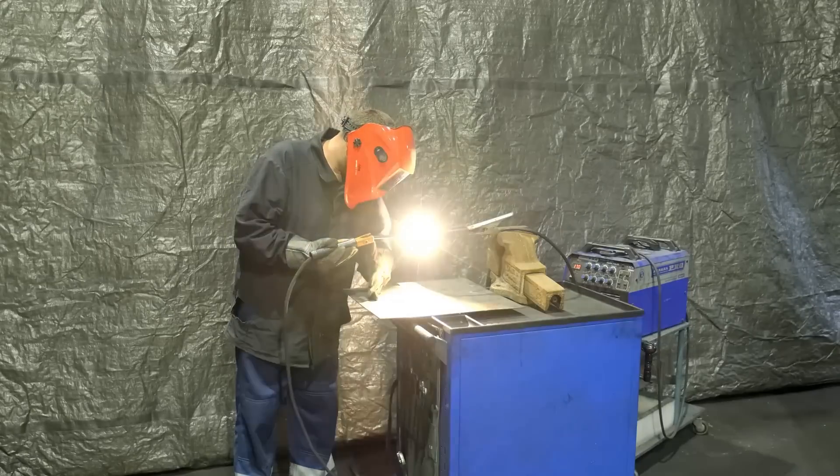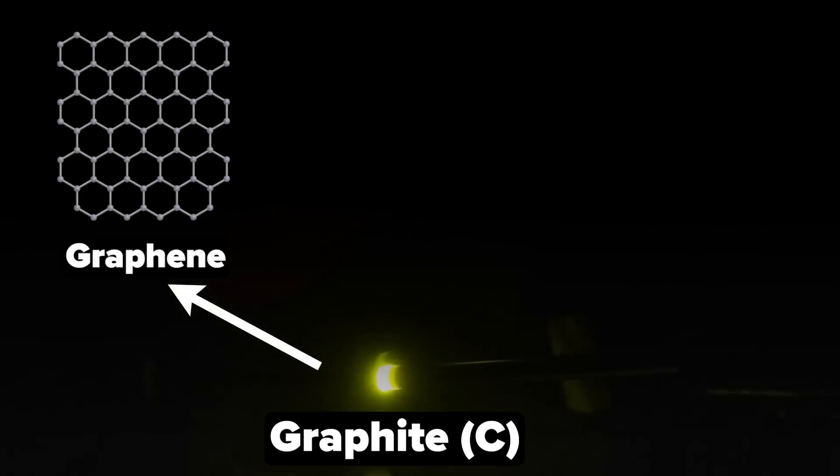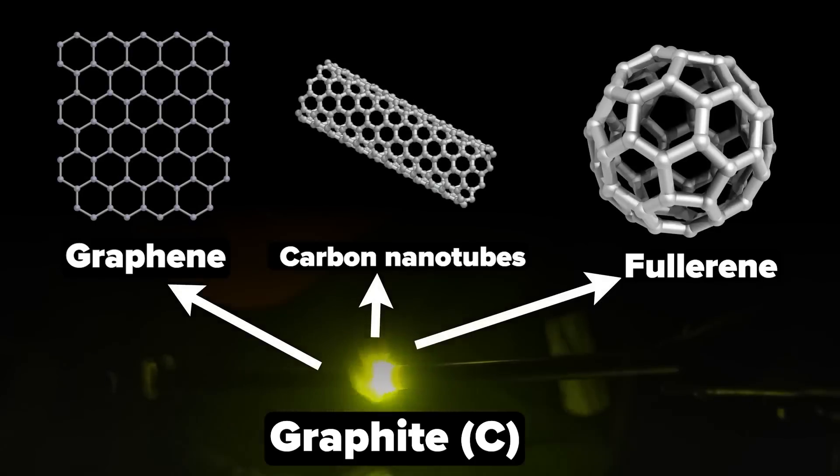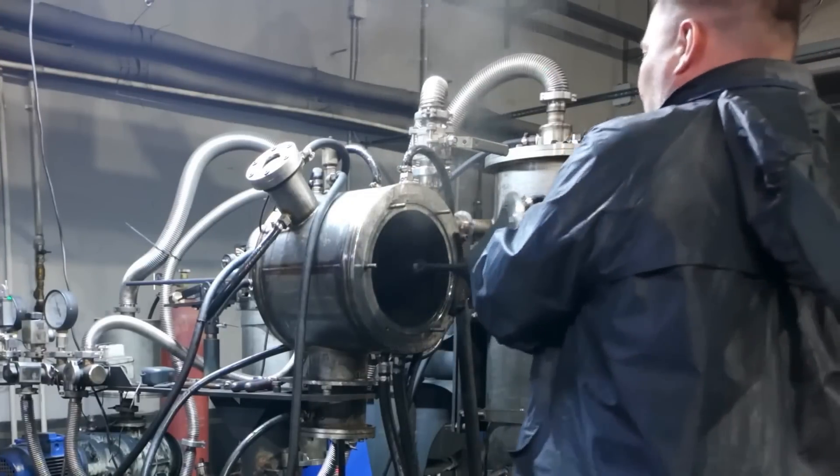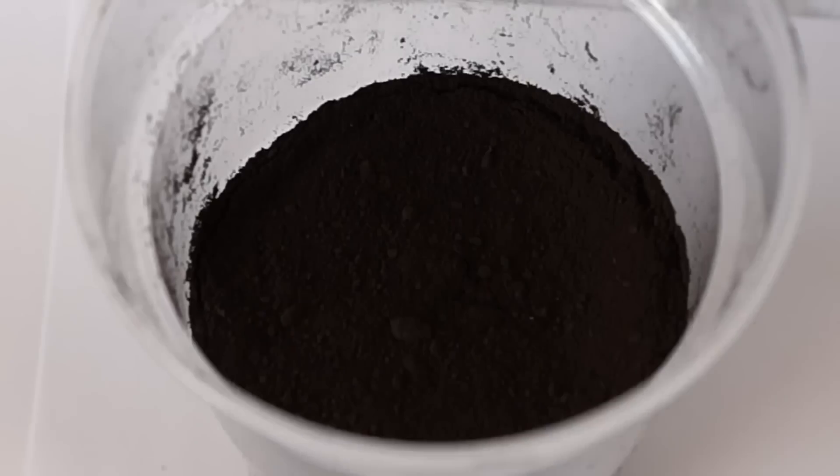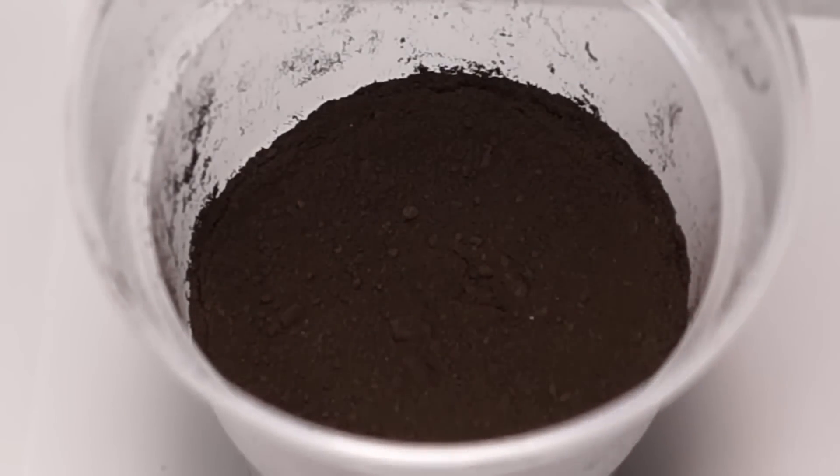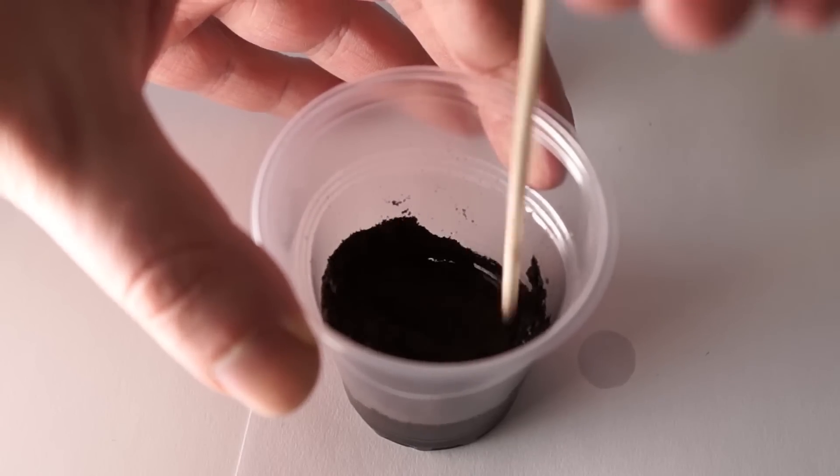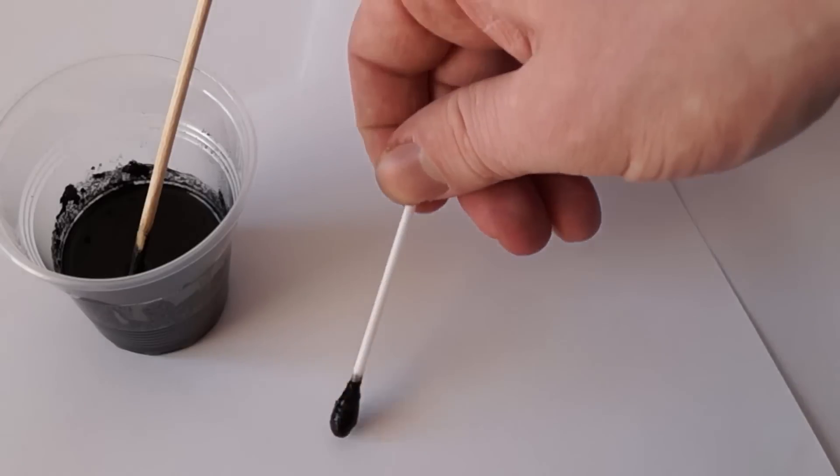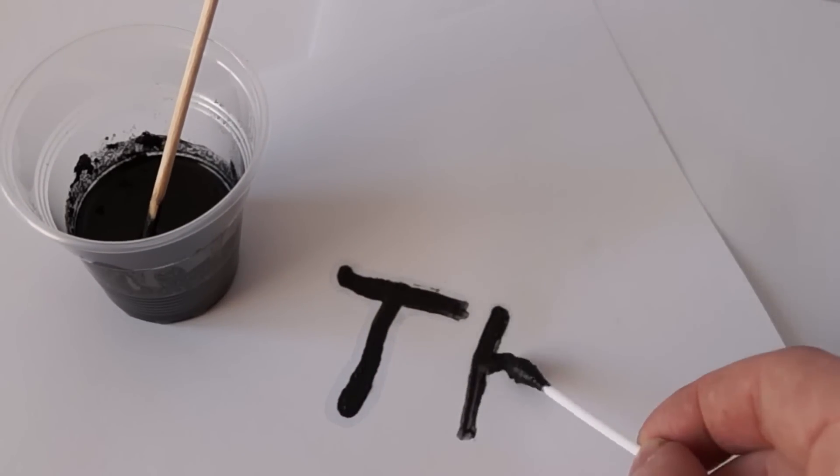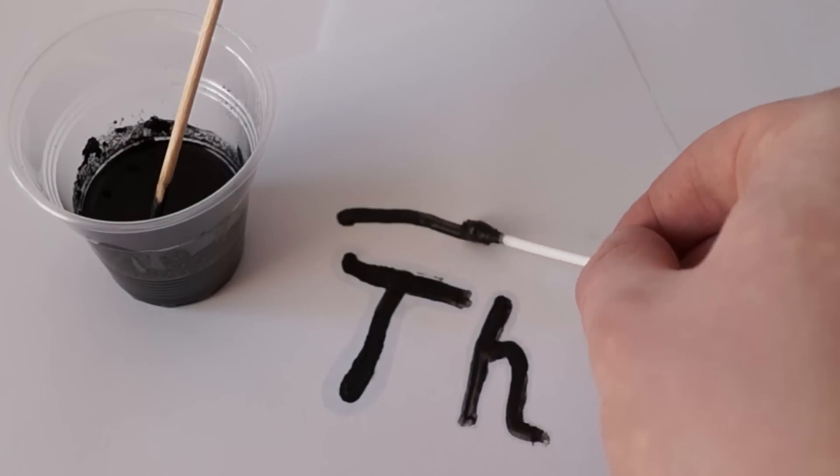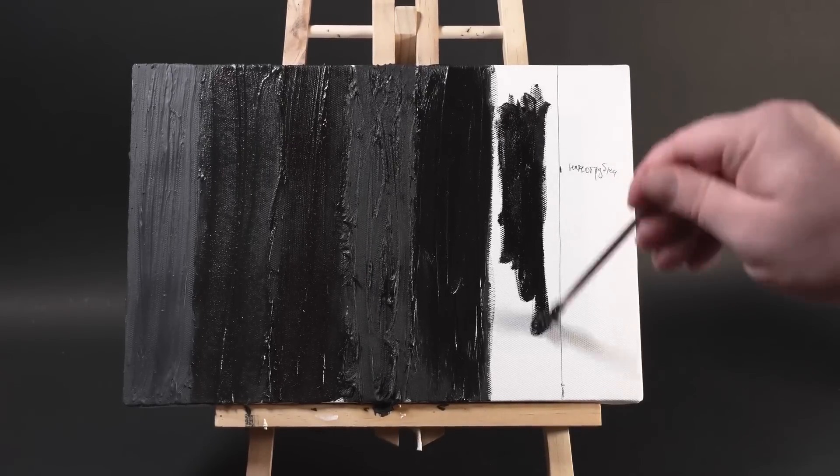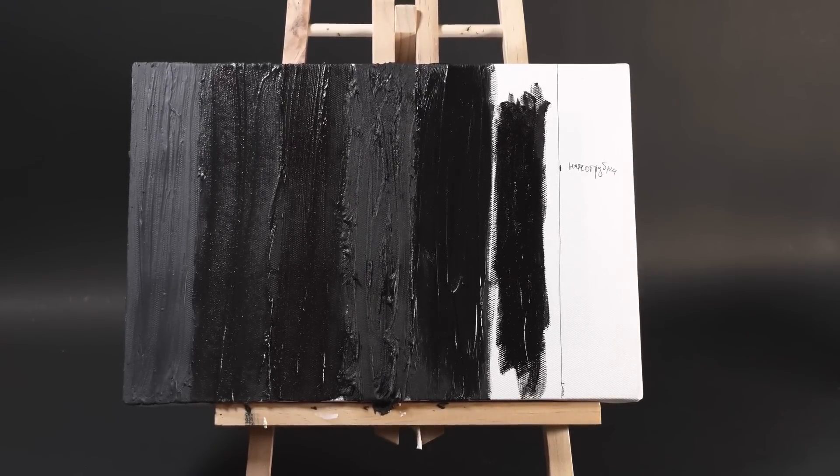Besides amorphous carbon, shungite also contains several other forms of carbon, which I recently talked about in my video. In it, we obtained fullerenes, which have every chance of becoming popular nanomaterials extensively used in both industry and medicine. They are obtained in a vacuum by burning graphite rods in an inert atmosphere. During this process, a lot of byproduct is formed in the form of carbon black, consisting of all possible types of carbon. I became curious about what would happen if I mixed this soot with linseed oil and how black the resulting paint would be. As you can see, it draws just great on paper. When applied to the canvas, it definitely looks extremely promising, since the color turns out to be a bit darker than that of shungite.